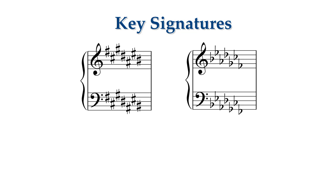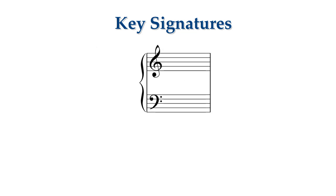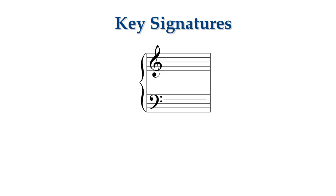Watch and copy the sharp and flat symbols in their correct place and order in both treble and bass clef. The sharps go in order: F, C, G, D, A, E, and B. Next, practice the flats in order in both treble and bass clef: B, E, A, D, G, C, and F.